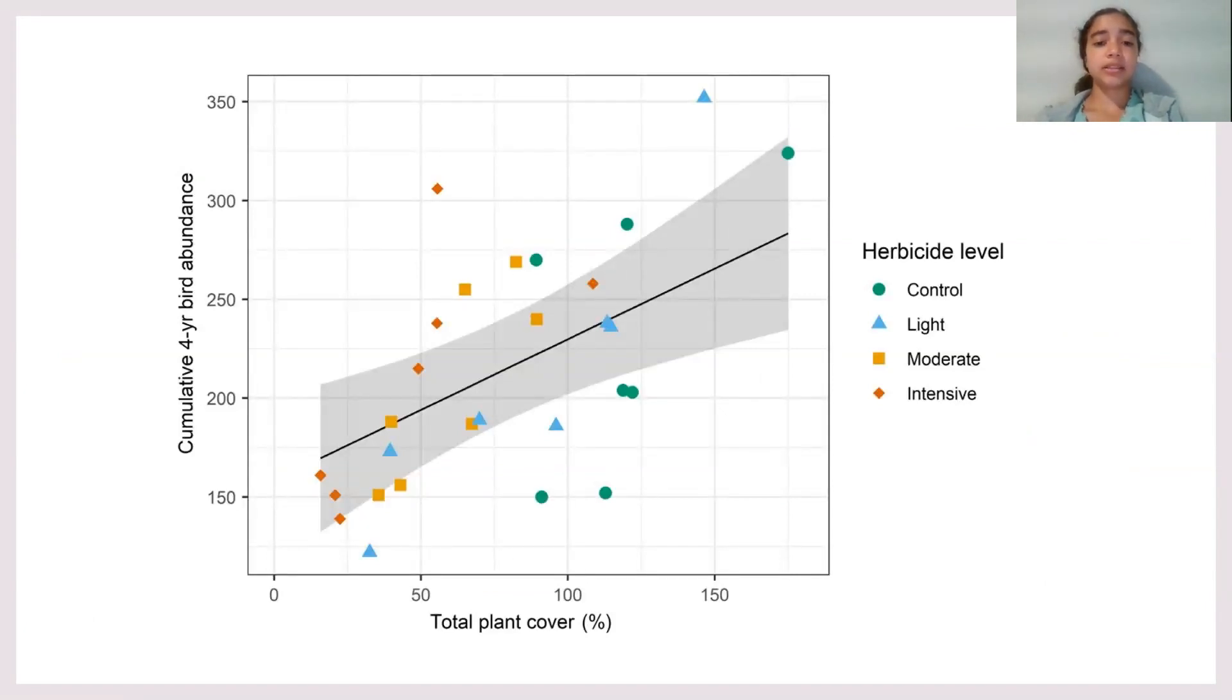This graph shows that as total plant cover went up, there was an increase in bird abundance. It also shows the different herbicide levels, where intensive herbicide levels had less plant cover meaning less birds present, and control had the most plant cover and most bird abundance. But even though there was more birds around with more plant cover, this did not affect the top-down control because the amount of bird predation on the arthropods did not change.